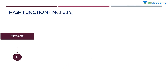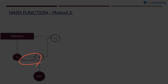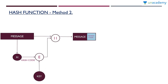Now let us see the next method. There will be a message and a hash function. The message is applied to the hash function to produce a hash code. Now, the hash code alone will be encrypted using a key. So the hash code plus key is applied to an encryption algorithm to get an encrypted version of the hash code. This encrypted hash code is then appended to the message, so the output is message plus encrypted hash code.